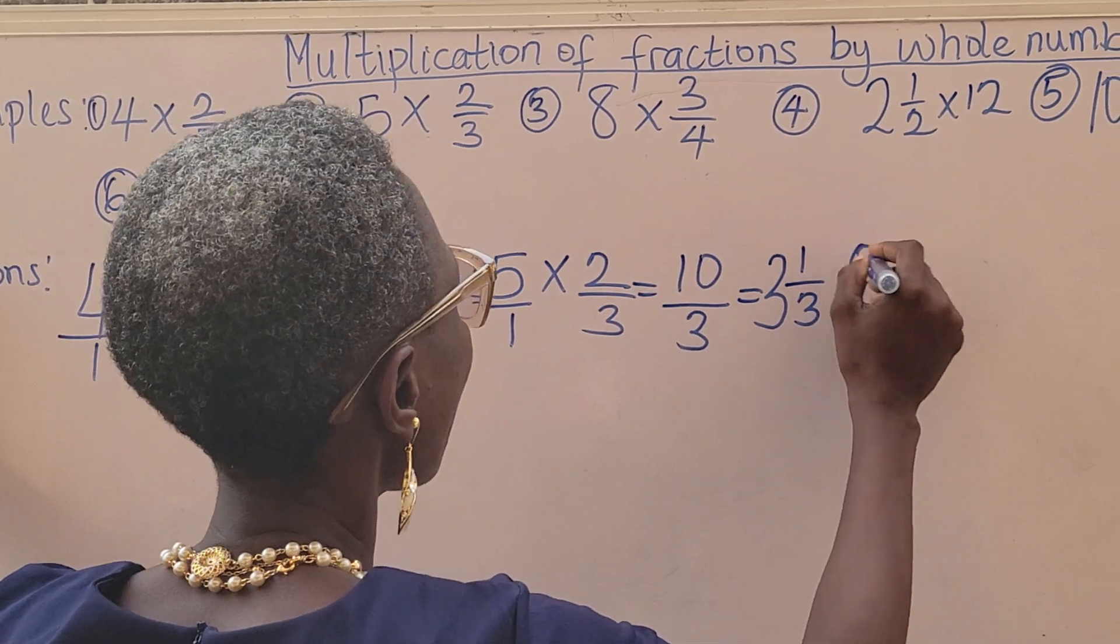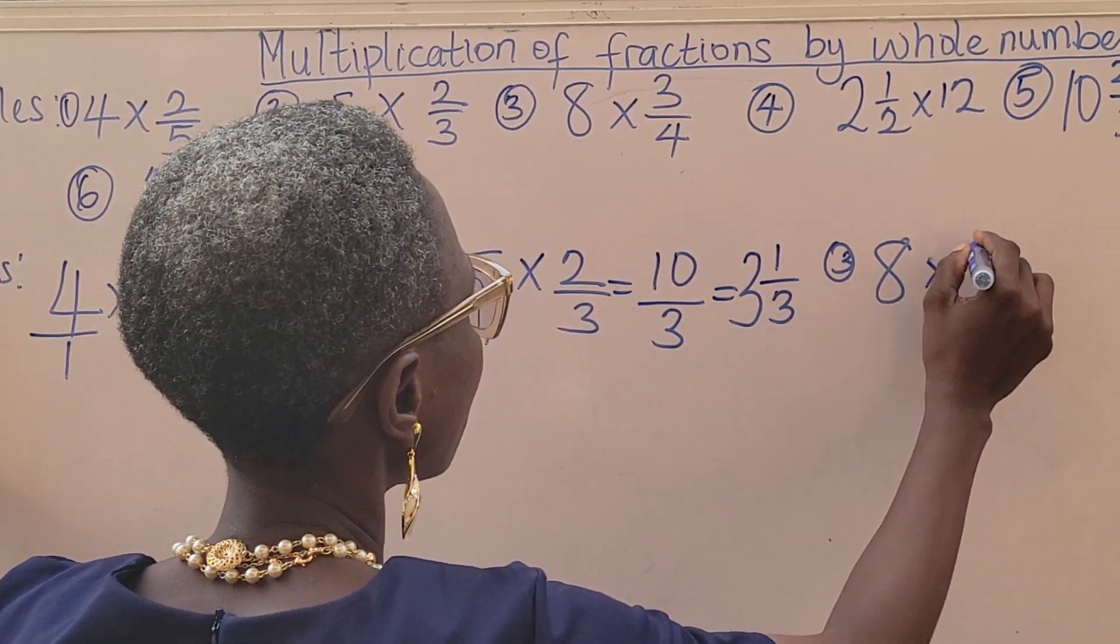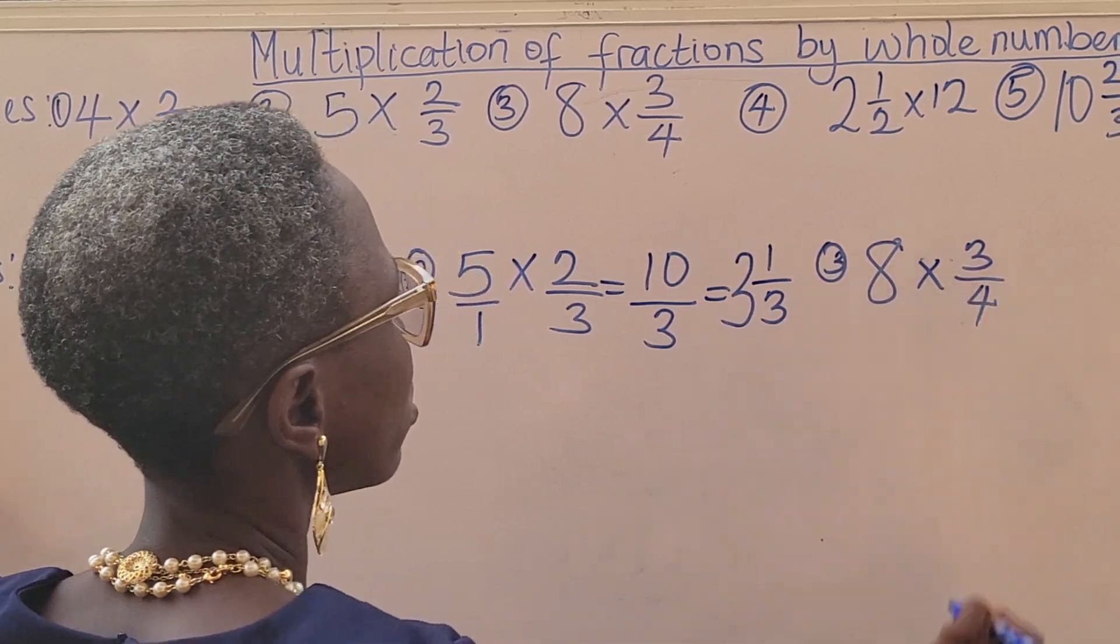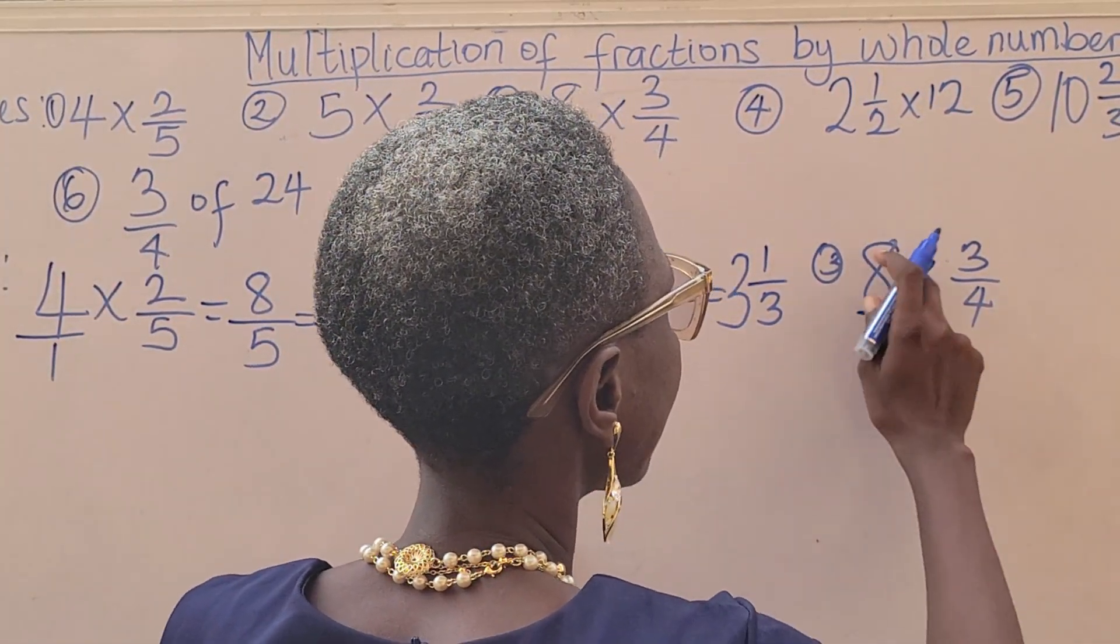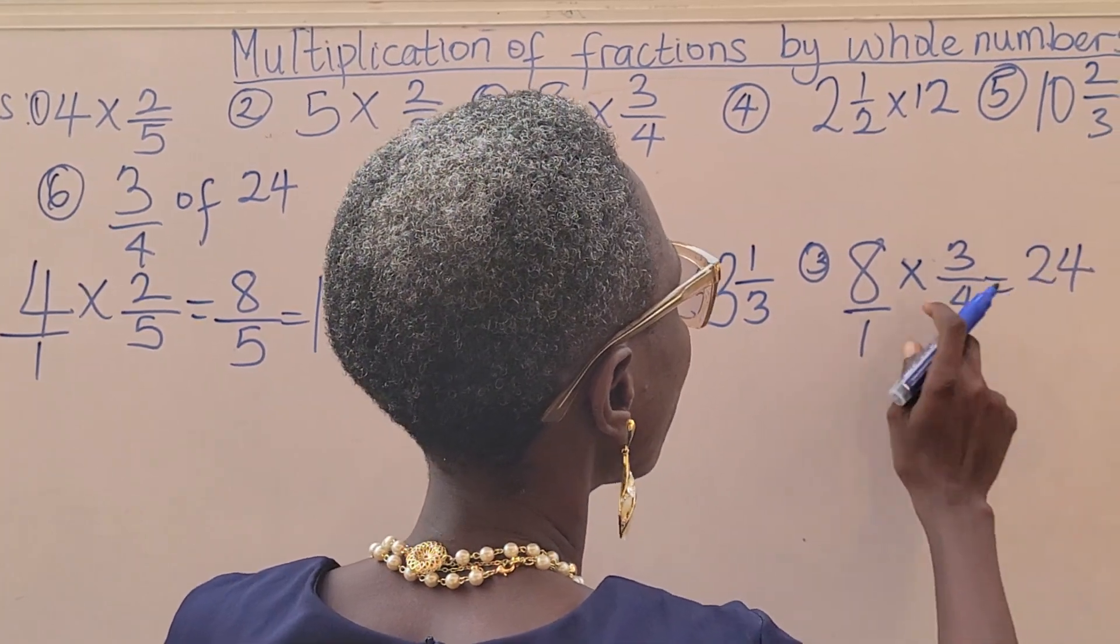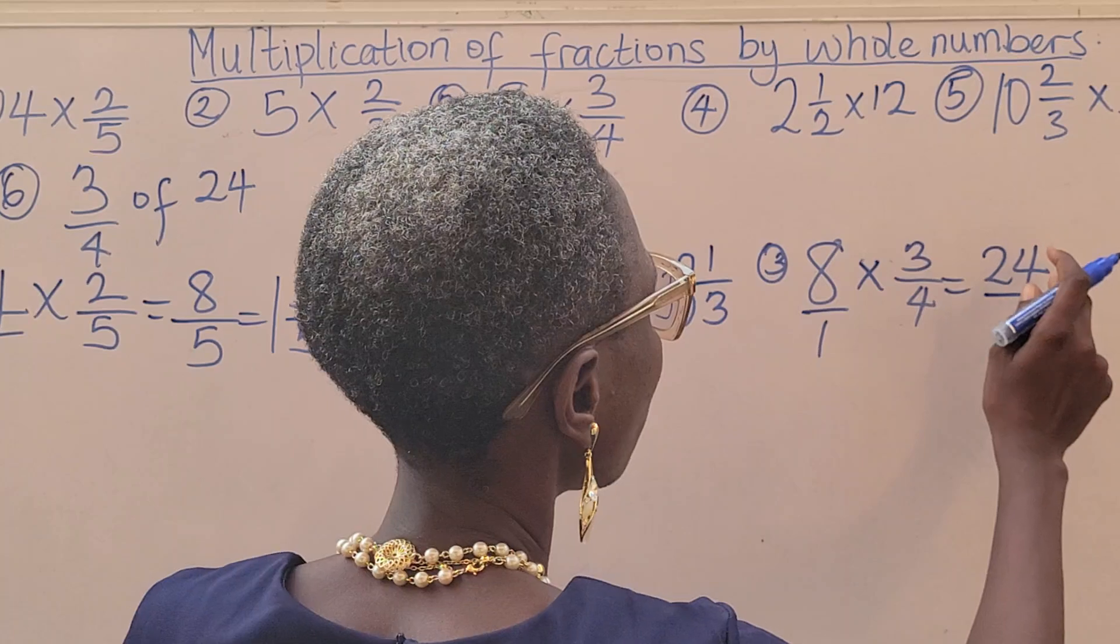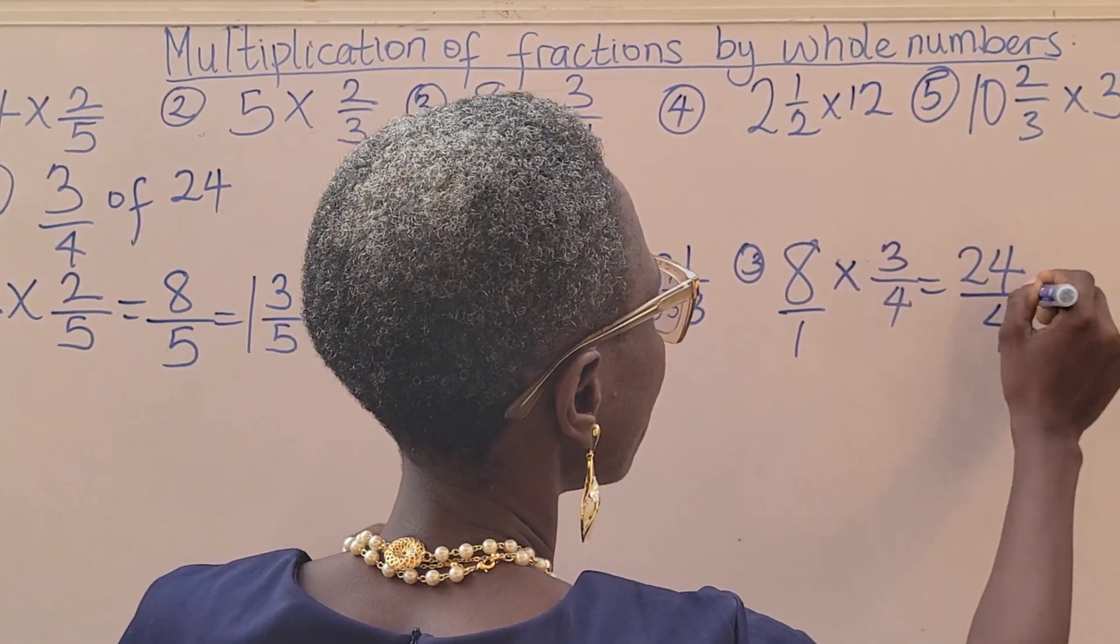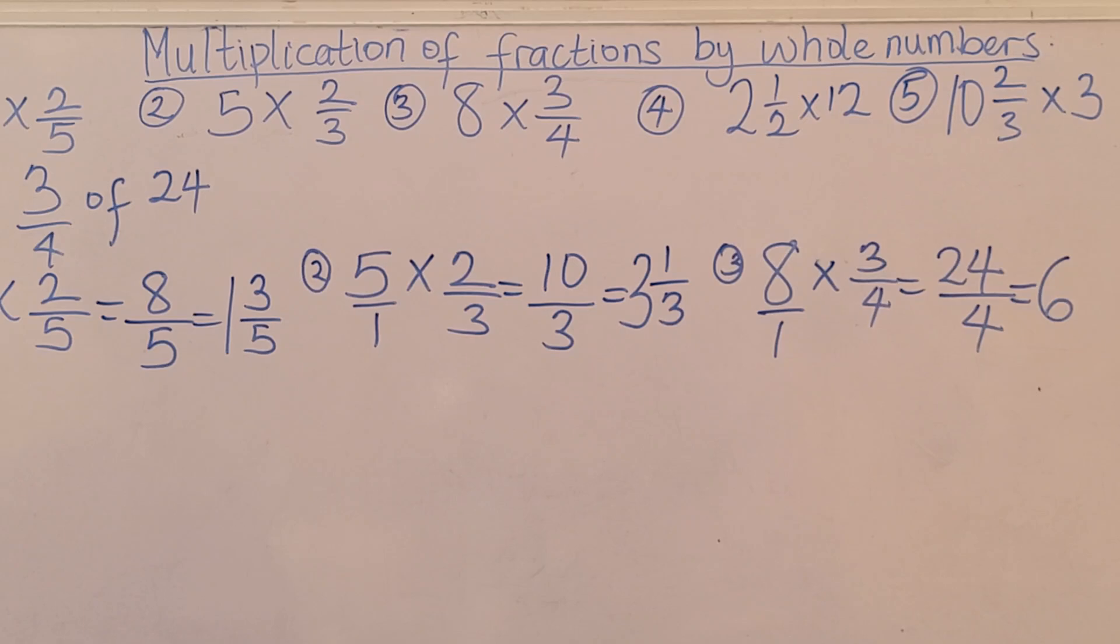Then number 3, we have 8 times 3 over 4. How do we do this? Just multiply. 8 times 3, 24. 4 times 1, that's 4. 24 divided by 4. Here we are getting a whole number, 6. That's our final answer.